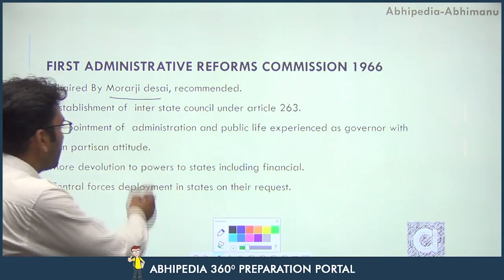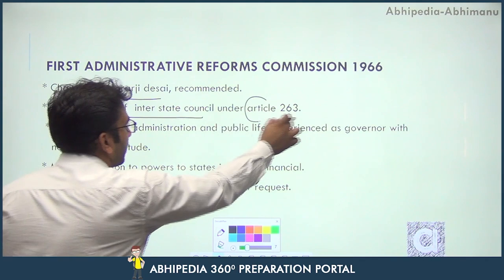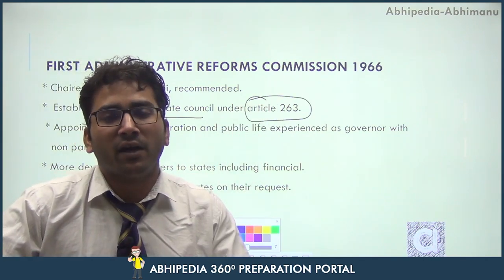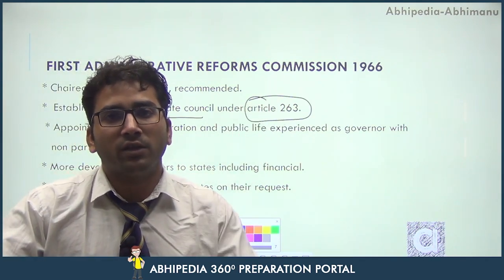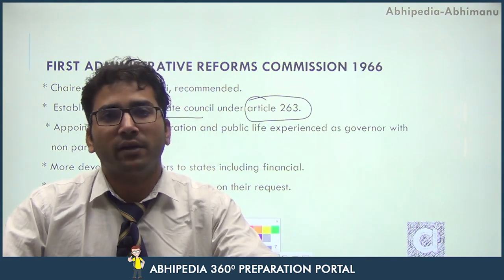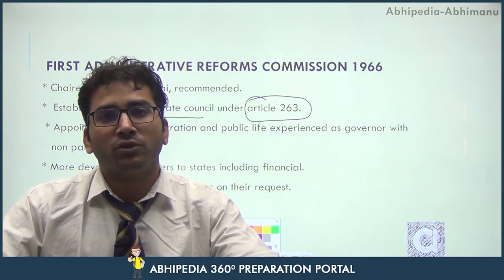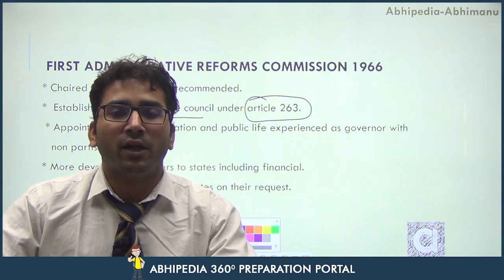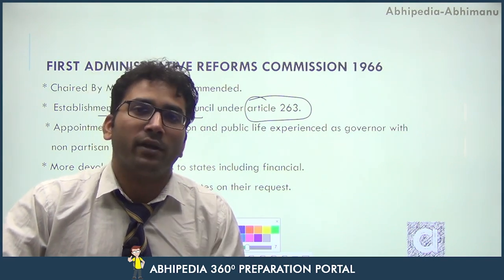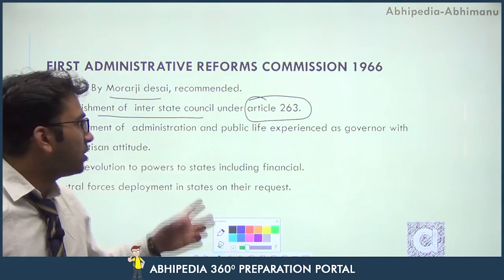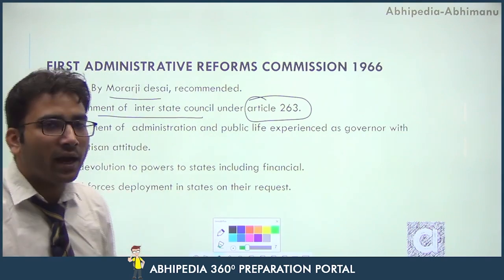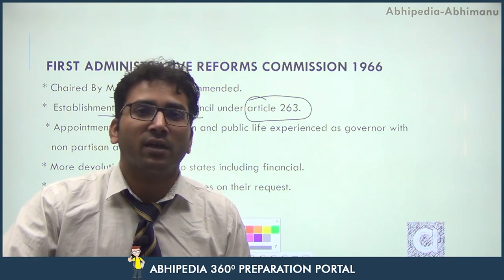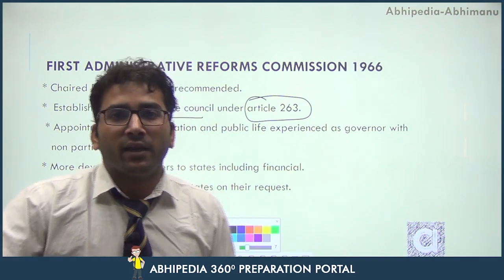First, establish an Interstate Council under Article 263 to promote conciliation, harmony, and coordination and cooperation between the Centre and the states, and to ensure that Centre and states work in harmony. The Interstate Council was recommended by the Admin Reform Commission but was finally established on the basis of the Sarkaria Commission in the year 1990.